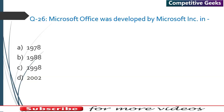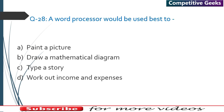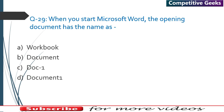Starting from question 26. Question 26: Microsoft Office was developed by Microsoft Corporation in — answer B, 1988. Question 27: MS Word is a — answer B, word processing software. Question 28: A word processor would be best used to — the answer is C, type a story, as it is a word processing software.